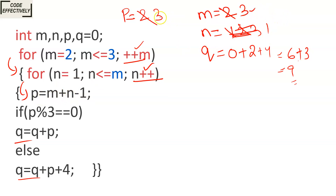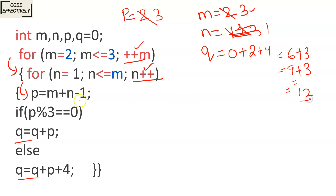P equals 3 plus 1 minus 1, which is 3. 3 modulus 3 is 0, condition is true. So Q equals Q plus P: Q is 9 plus P which is 3, giving Q equals 12. The new value of Q is 12.